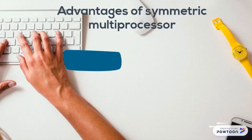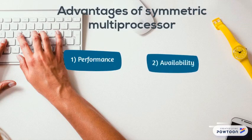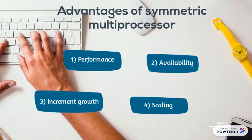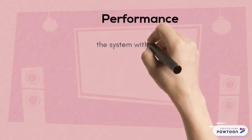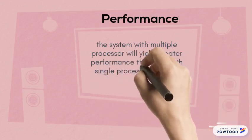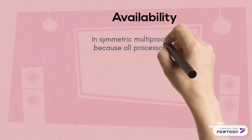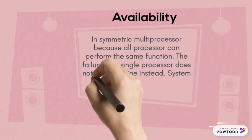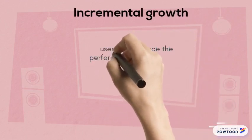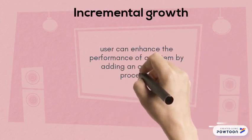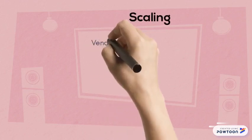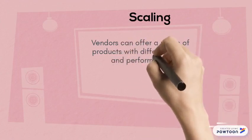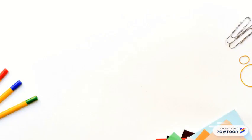There are four advantages of symmetric multiprocessor: performance, availability, incremental growth, and scaling. For performance, a system with multiple processors will yield greater performance than one with a single processor of the same type. For availability, because all processors can perform the same function, the failure of a single processor does not halt the machine; the system can continue to function at reduced performance. For incremental growth, a user can enhance performance by adding an additional processor. For scaling, vendors can offer a range of products with different price and performance characteristics based on the number of processors.